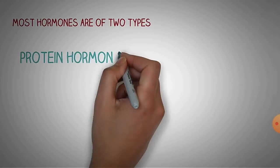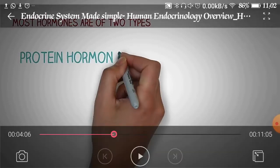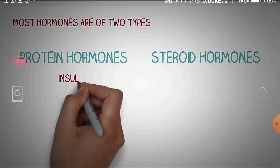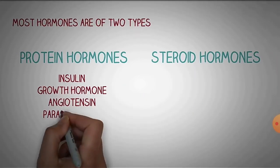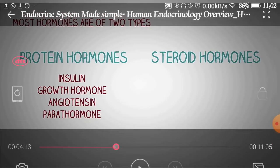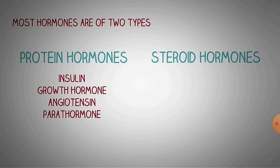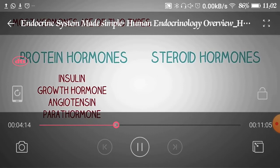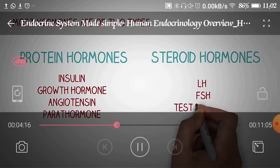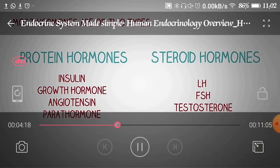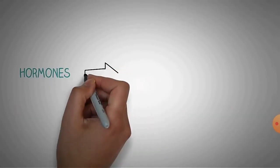Most hormones are of two types: protein hormones and steroid hormones. In protein hormones, insulin, growth hormone, angiotensin, and parathyroid hormone are present. In the case of steroid hormones, LH (luteinizing hormone), FSH (follicle stimulating hormone), and testosterone are included — meaning they are lipid-containing hormones.